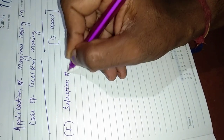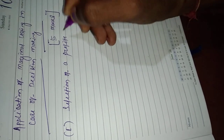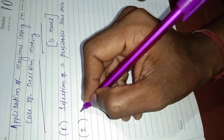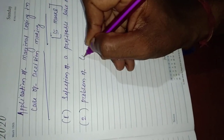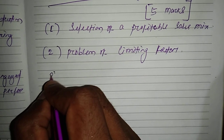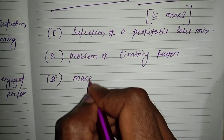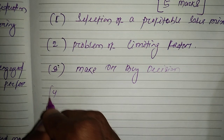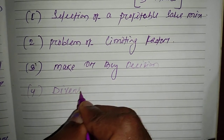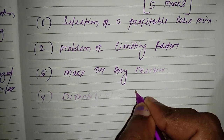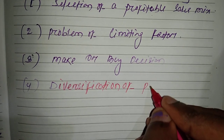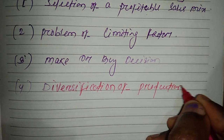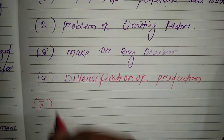Selection of a profitable sales mix. The second application is the problem of limiting factor. The third application is make or buy decision. The fourth application is diversification of production.